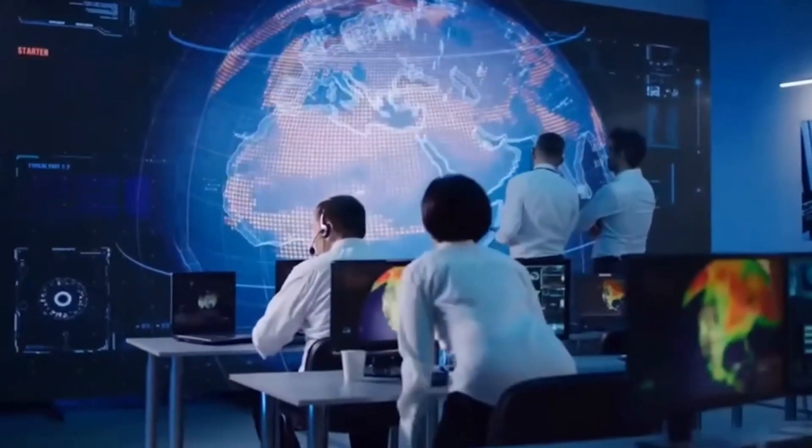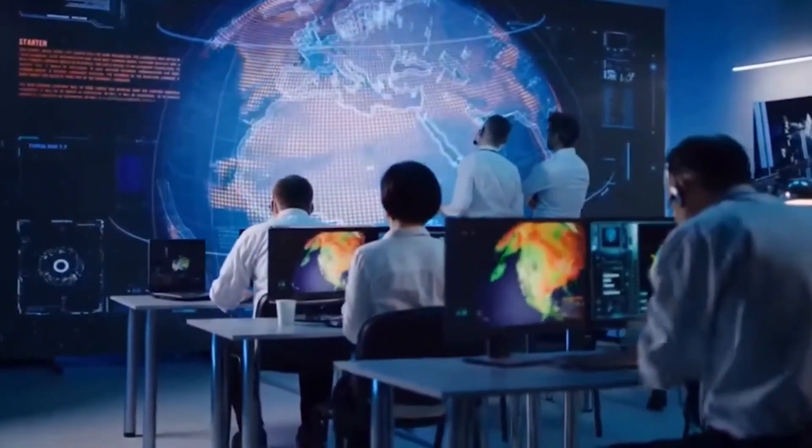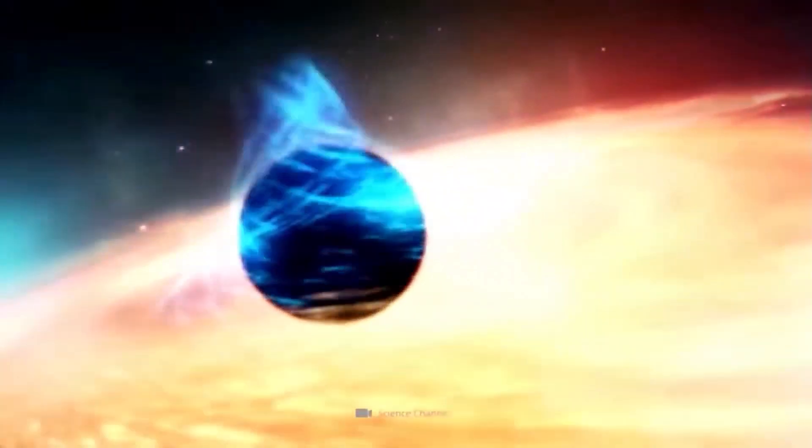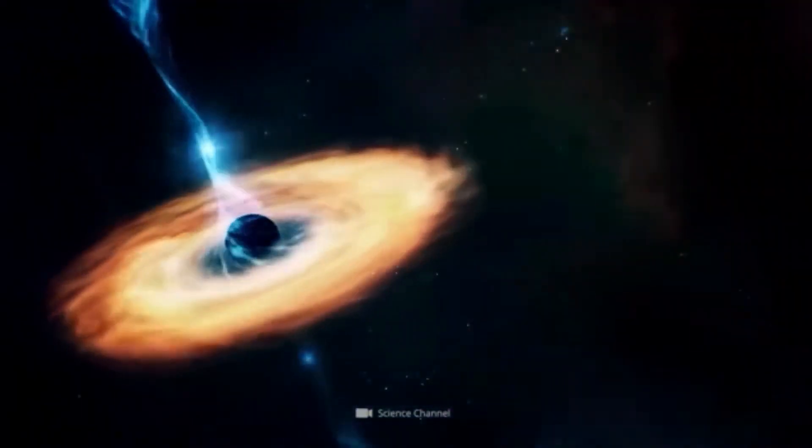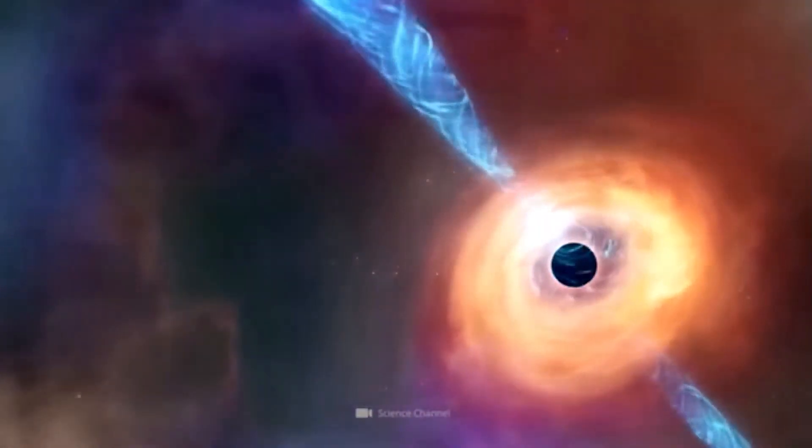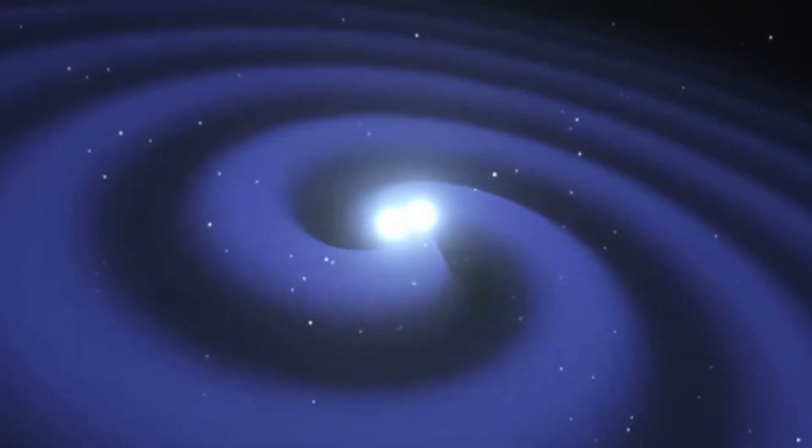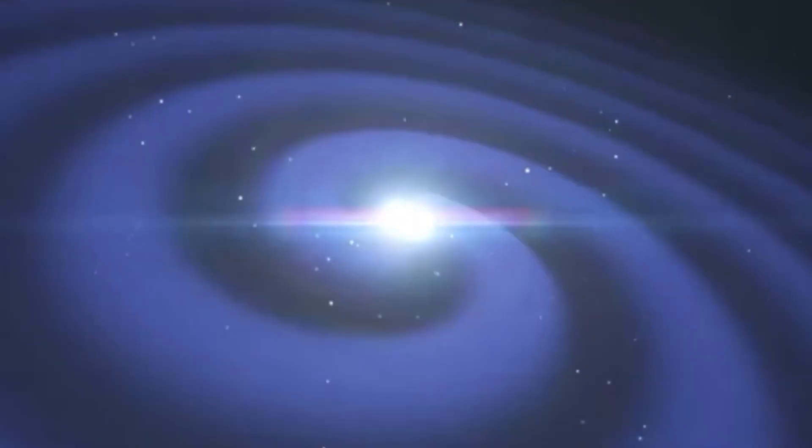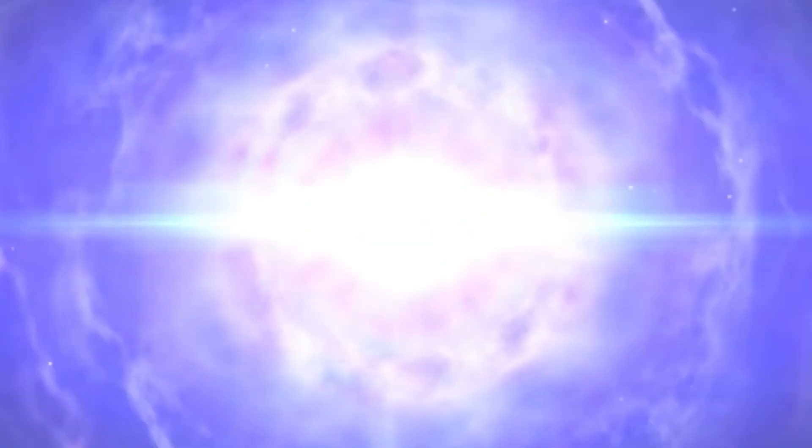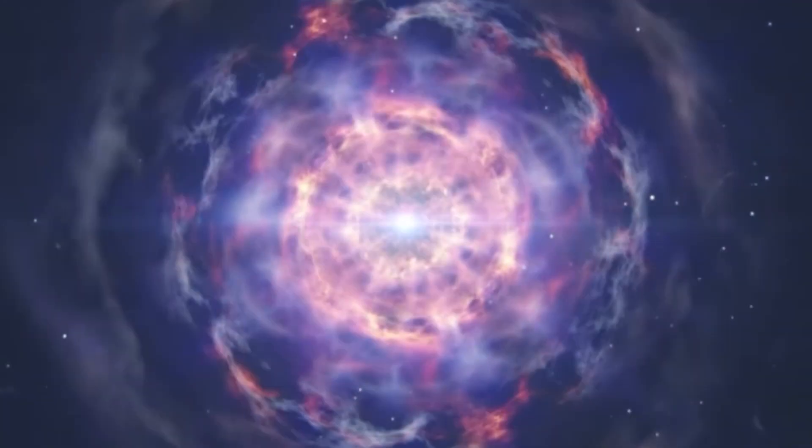So far, we have only observed two distinct classes of black holes: gigantic supermassive black holes lurking in the centers of galaxies with masses millions to billions of times the mass of our Sun, and their smaller counterparts, stellar mass black holes, born from the violent deaths of massive stars and with masses only a few times that of the Sun.